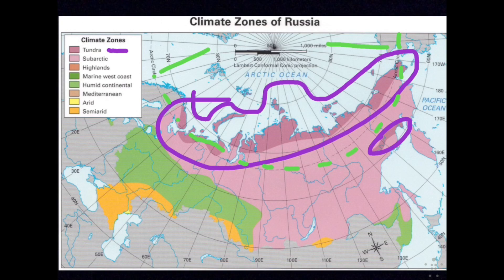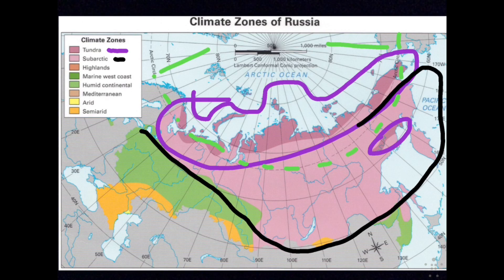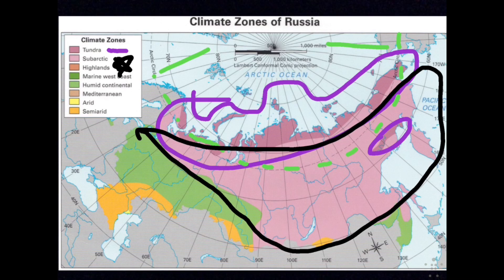Then we have the subarctic zone, just below the tundra, which stretches into most of Siberia. This is Russia's dominant climate — there is more subarctic than anything else in Russia. Some of the world's coldest temperatures occur in the subarctic zone, even though it's not as far north as the tundra. Snow covers the ground 120 to 250 days a year.